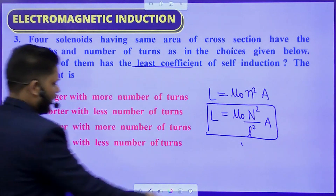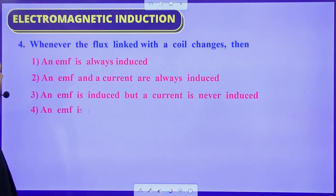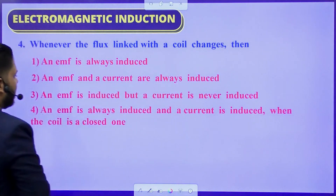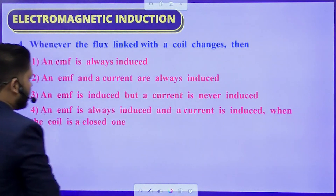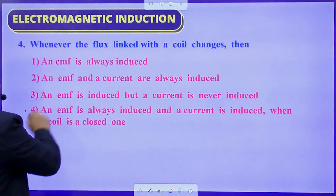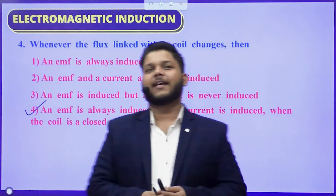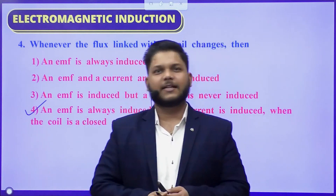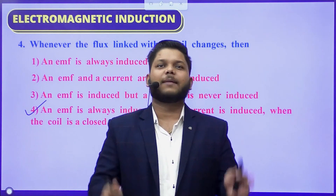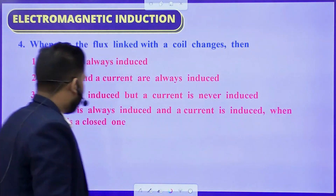Question number 4: Whenever the electric flux linked with the coil changes — an EMF is always induced; an EMF and current are always induced; an EMF is induced but current is never induced; or an EMF is always induced and current is induced when the coil is closed. The correct option is the fourth part. In electromagnetic induction, if magnetic flux linked with any coil changes, induced EMF will always come. If the circuit is closed, then there will be induced current; otherwise only induced EMF.